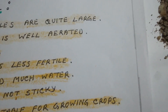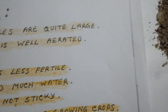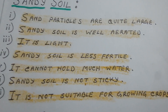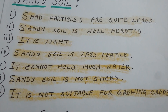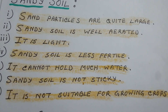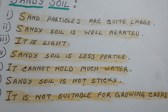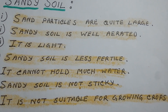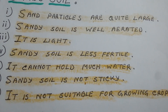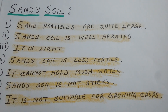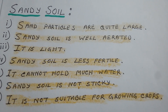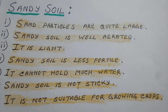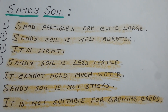Sand particles have large spaces between them, which makes sandy soil very porous. Water moves rapidly through it and dries quickly, so it cannot hold much water. Sandy soil is light and has a tendency to be blown away by the wind if left bare.